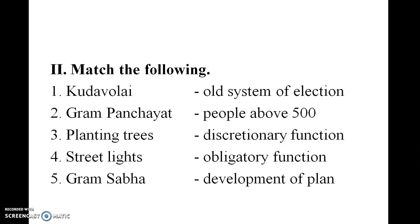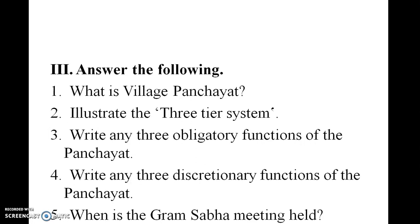Match the following: Kudavole — old system of election; gram panchayat — people above 500; planting trees — discretionary function; street lights — obligatory function; Gram Sabha — development plan.